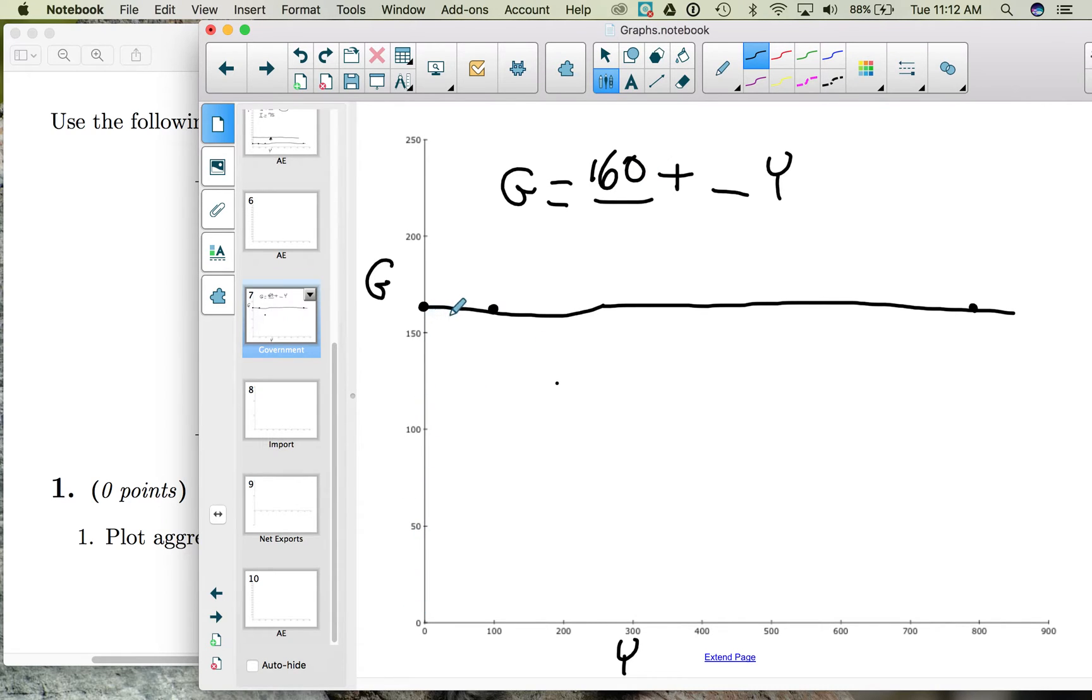When income is zero, the government is spending 160 dollars. As income increases, government spending doesn't change. So there is no induced spending. Government spending is wholly autonomous. And the government spending in this example is equal to 160.